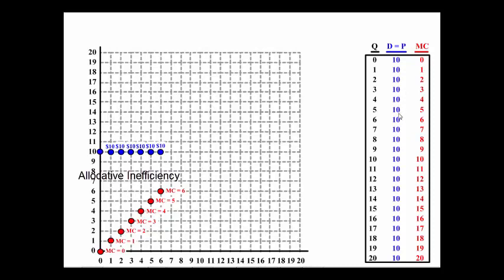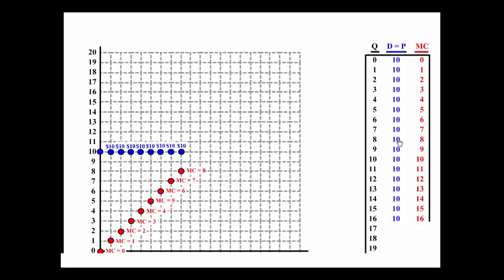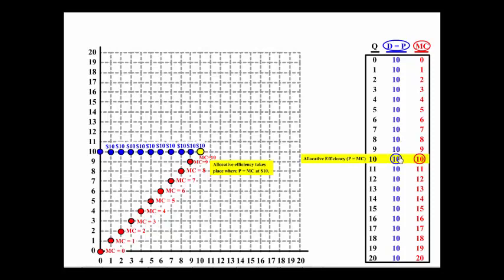But notice as production keeps climbing to the 10th unit at $10, this is called allocative efficiency. The price paid by the consumer is equal to the additional cost of the last unit produced.